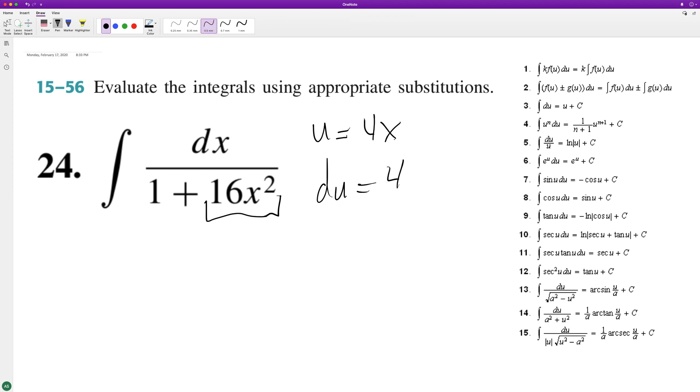So to get du equal to this, we need to multiply by 1/4. So 1/4 du will be equal to dx. Did I get that wrong? I know, I think it's right. Excuse me, just checking my work. Okay, yep, alright.